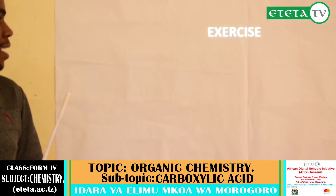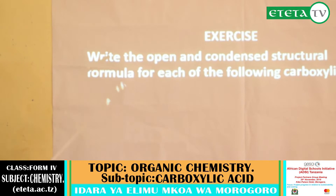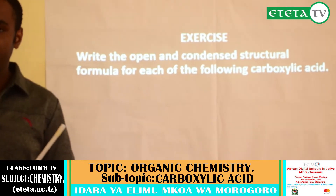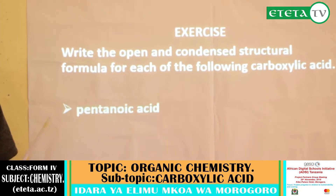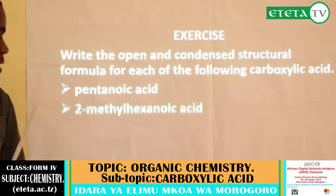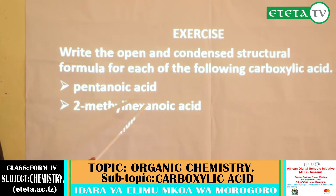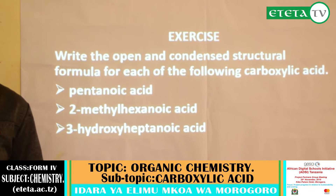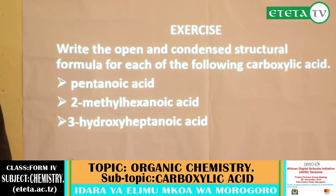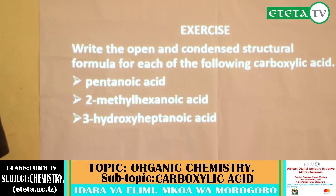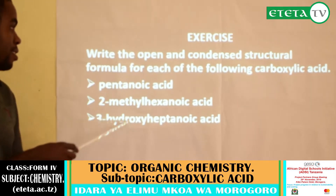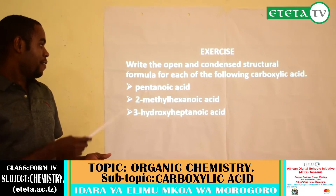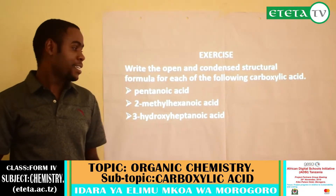Now, exercise. The question says: write the open and condensed structural formula for each of the following — pentanoic acid, 2-methylhexanoic acid, and 3-hydroxyheptanoic acid. It is my hope that it is very simple to write the condensed and open structural formulas for these three compounds, as you revise the examples I explained earlier.